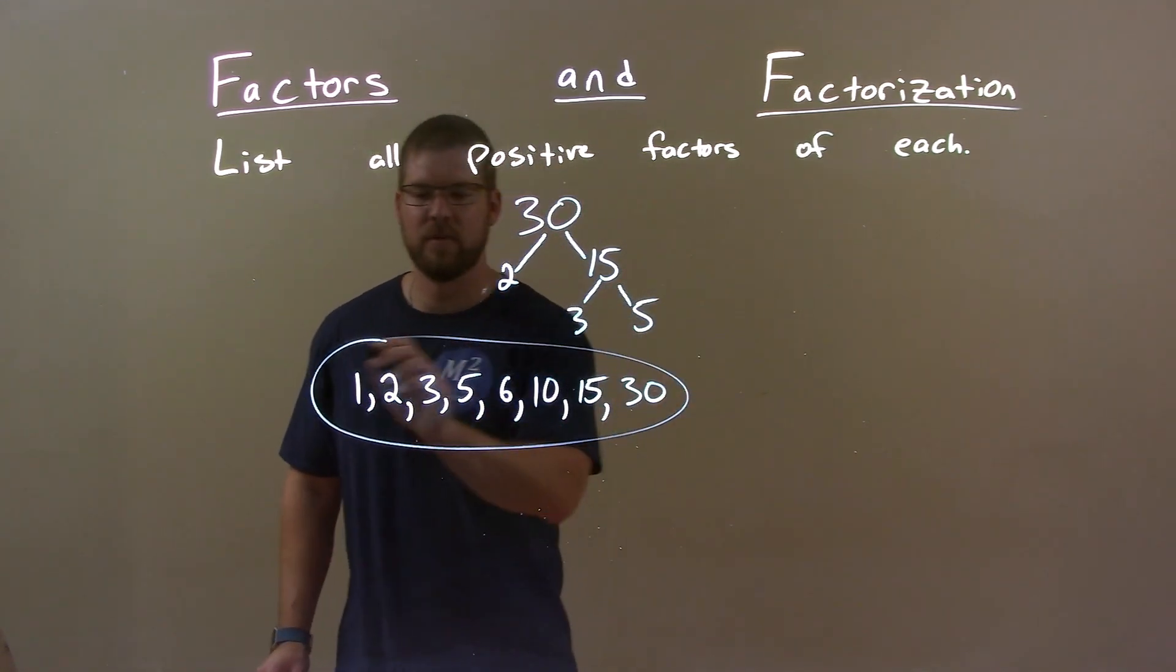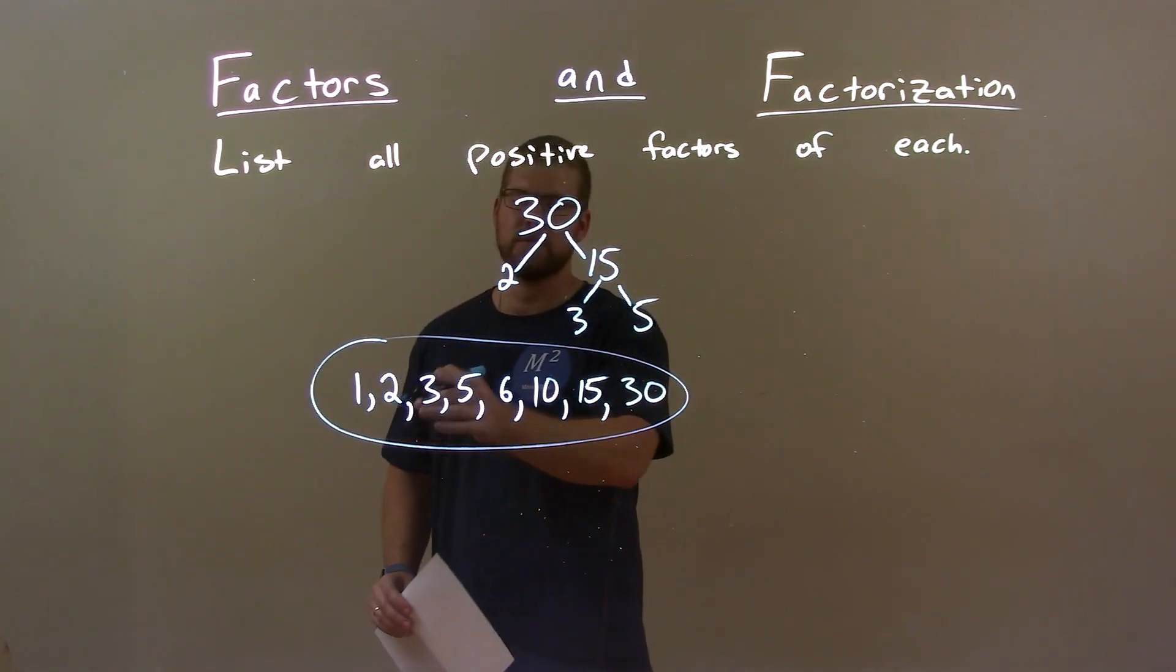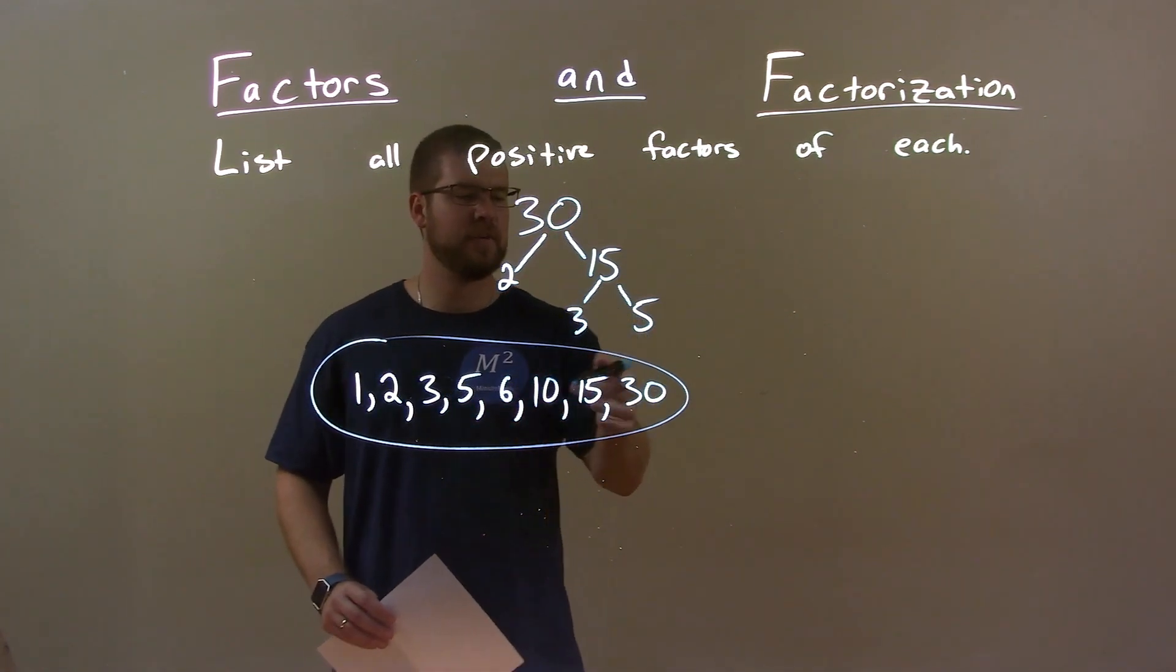And so here is our final answer. Our list of numbers. 1, 2, 3, 5, 6, 10, 15, and 30.